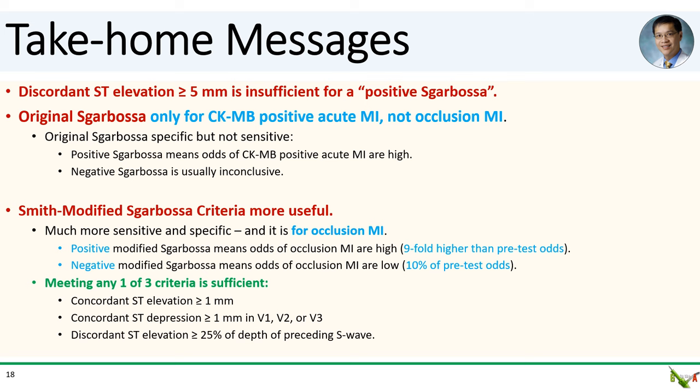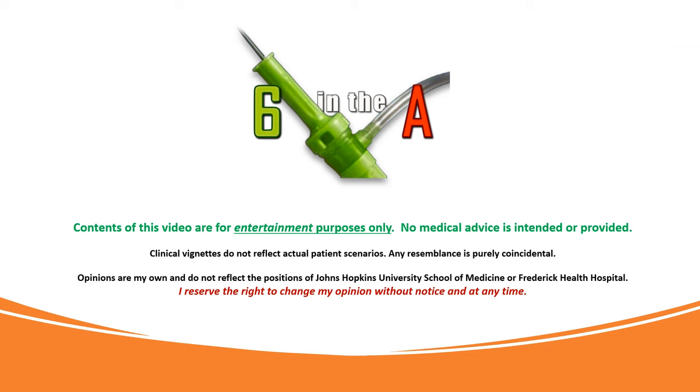The more recent Smith modified Sgarbossa criteria is much more helpful. It is designed to predict STEMI equivalent occlusion MI and is both sensitive and specific. A positive modified Sgarbossa means the odds of an occlusion MI are high; a negative modified Sgarbossa means the odds are low. Meeting any of the three criteria is sufficient: concordant ST elevation of 1 mm or more, concordant ST depression of 1 mm or more in the anterior leads, or discordant ST elevation of 25% or more of the depth of the preceding S-wave. Thank you for watching.